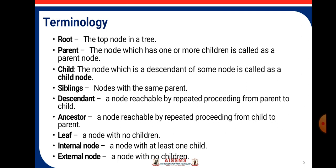Now, let us see the basic terminologies. Root: The top node in a tree is called root. Parent: The node which has one or more children is called as parent node. Child: The node which is a descendant of some node is called a child node. Siblings means the nodes which are having the same parent are called siblings. Descendant: A node that is reachable by repeated proceeding from the parent to the child is the descendant. Ancestor: A node reachable by repeated proceeding from the child to the parent is ancestor. Leaf: A node with no children is called as leaf. Internal node: A node with at least one child is the internal node. External node: A node with no children is the external node.